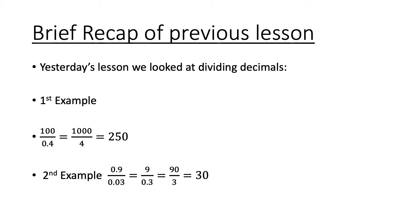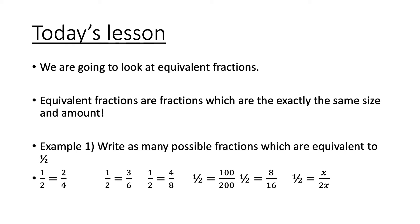Example 2: 0.9 divided by 0.3. I multiplied by 10 to get 9 divided by 0.3, then multiplied by 10 again to get 90 divided by 3, which is 30. A key note: if you divide by a decimal the answer is always bigger, and if you multiply by a decimal the answer is always smaller. Check out yesterday's video on dividing decimals for more.